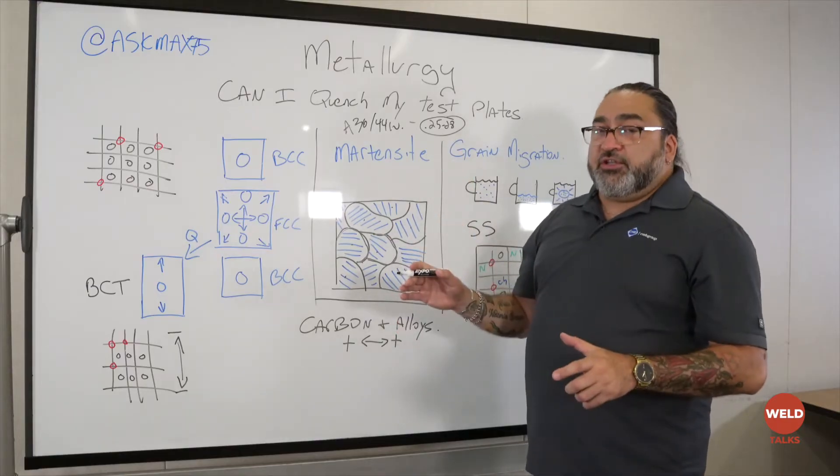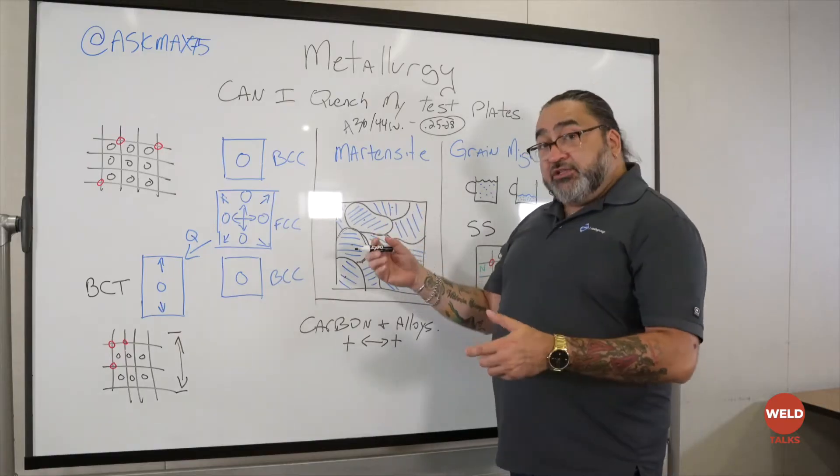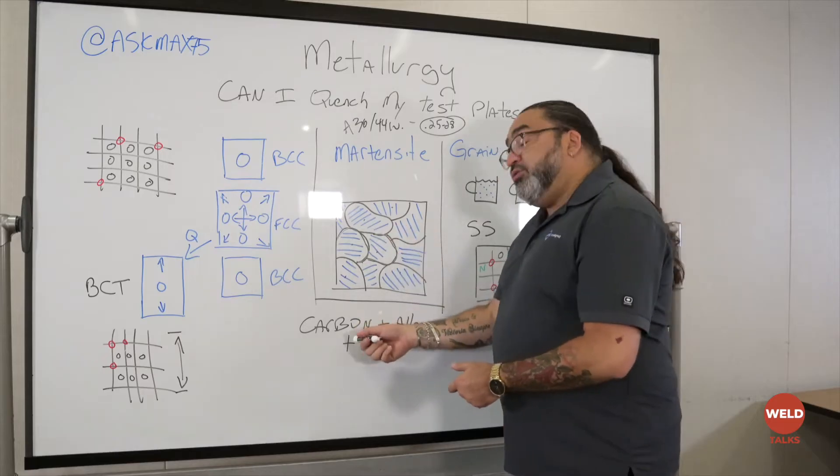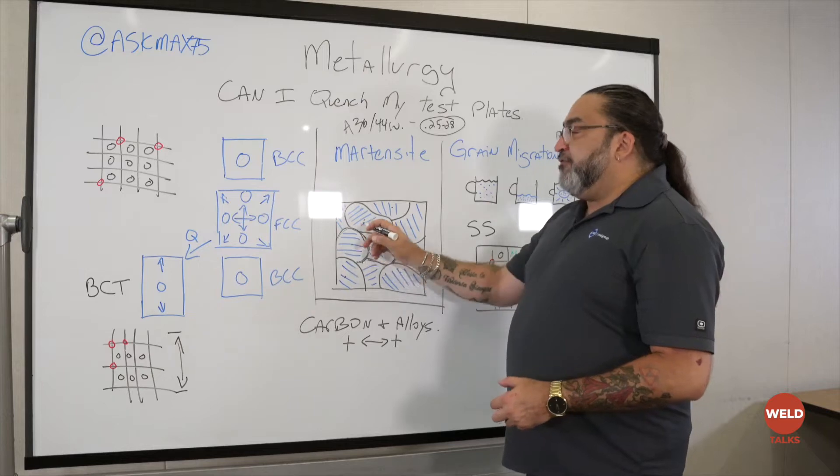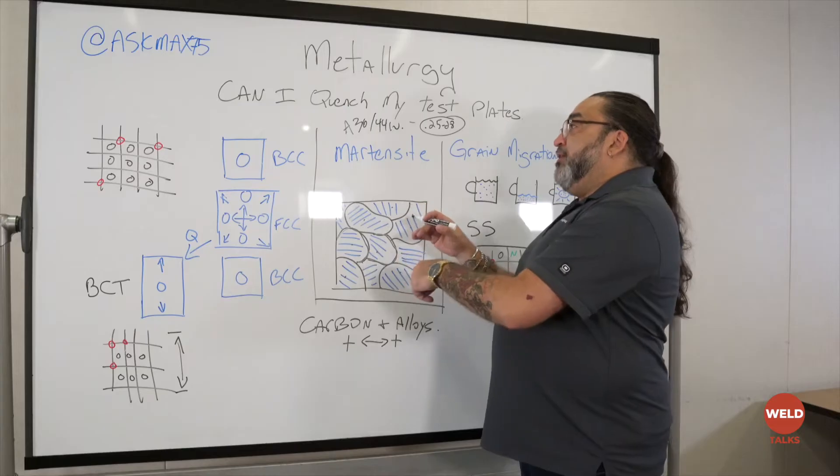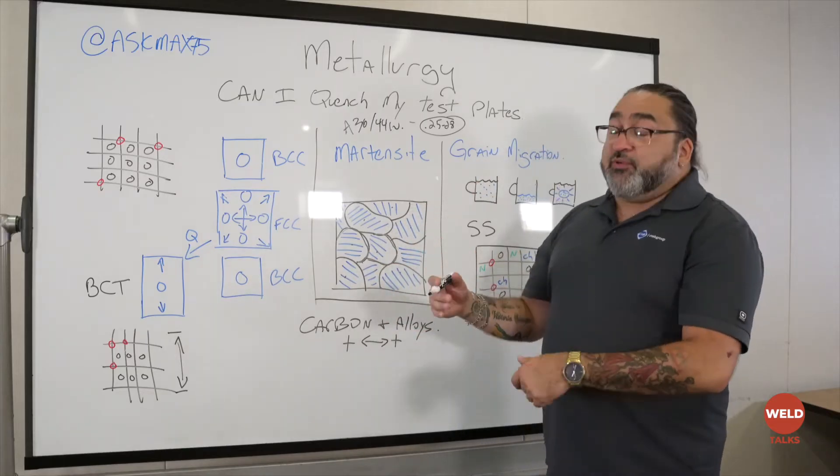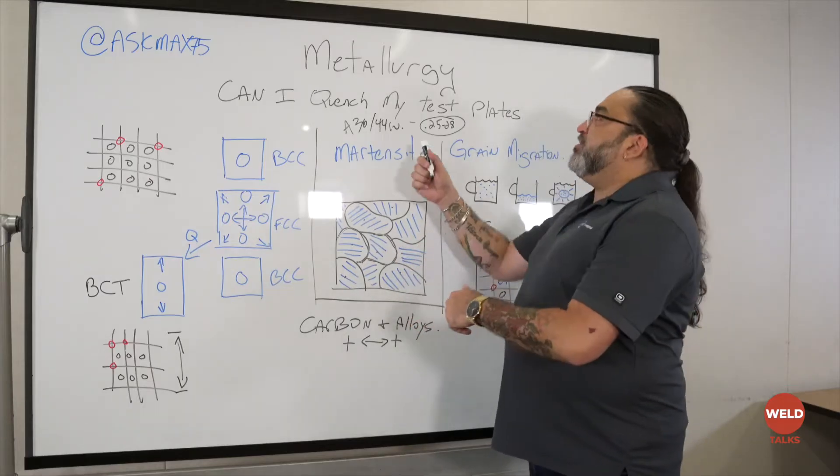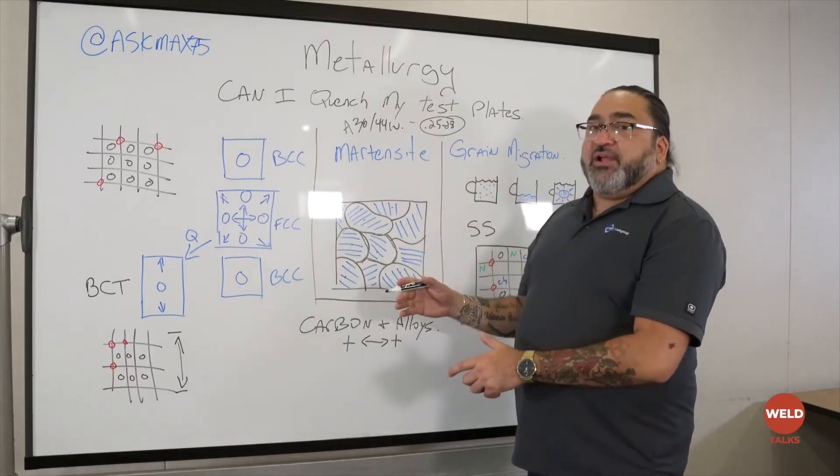So do I have the lattice structure for martensite? Yes, you can harden. I can harden this plate. But if I don't have enough carbon, I'm not creating a true martensite. I'm not getting that full grain migration within the lattices to create martensite. Can I create harder plates by quenching A36? Yes, they'll be a little bit harder. Yes, they'll be a little bit more brittle. But is it going to be enough to actually affect the bend of the test plate or to create pure martensite? That's debatable, not by science.